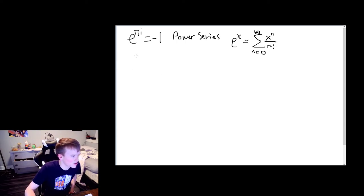Instead of using x, we're going to use πi, right? Because that's what we're trying to prove. So first term, we're going to get πi to the zero, which is just one, and then divide by one factorial, so our first term is one. Then n equals one, so we're going to get... I wrote this down so I wouldn't make any mistakes. It goes pretty straightforward from here.